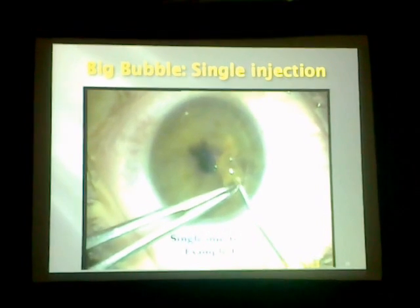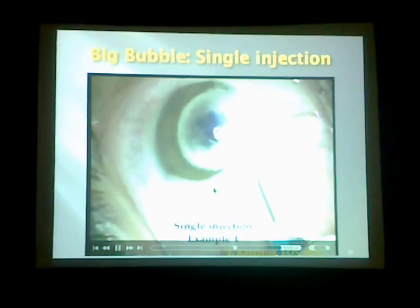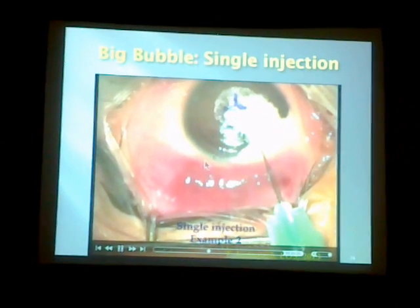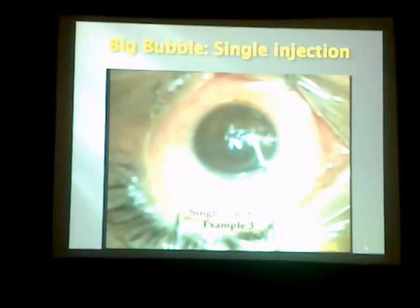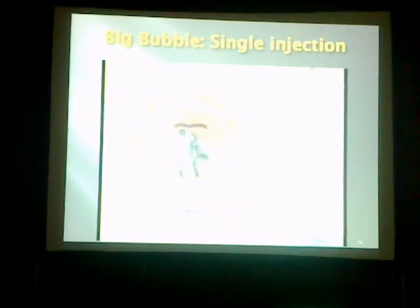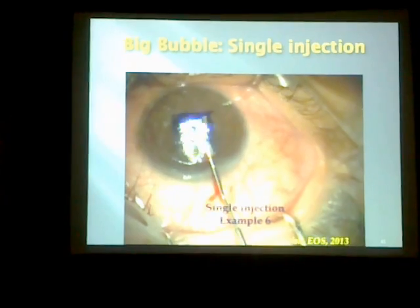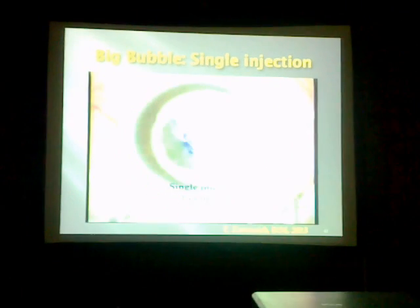These are some examples of big bubble formation. My old technique uses an insulin needle injected into the stroma, and you will find the bubble coming with its characteristic circular appearance. Multiple examples show this characteristic well-defined circular appearance after a single injection into the stroma.